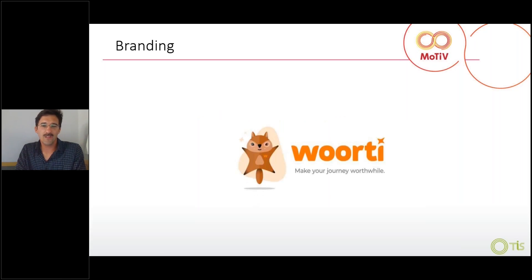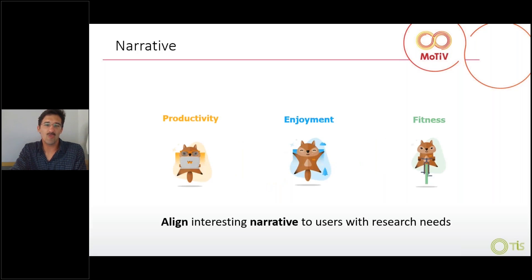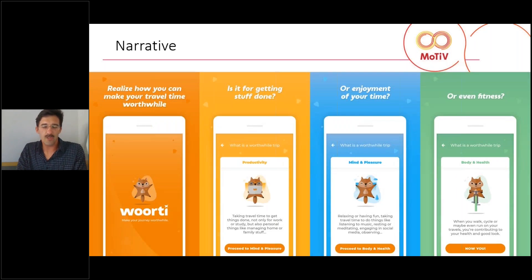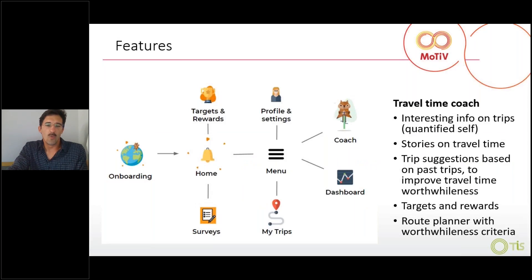We branded it 'Worthy,' coming from the worthwhileness of travel time. We built a narrative focused on the three elements of time worthwhileness used in MOTIVE: productivity, enjoyment, and fitness. We tried to align this narrative with the research needs — that's how we coupled the two: the needs from research and the needs from users. We designed an app based on this, with features related to data collection, trip validation, surveys sent to users, and features more related to incentivization such as the dashboard.